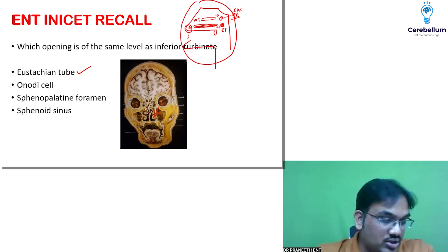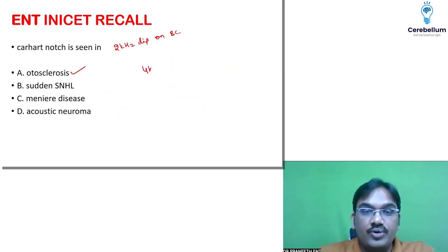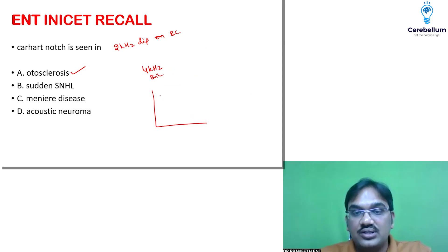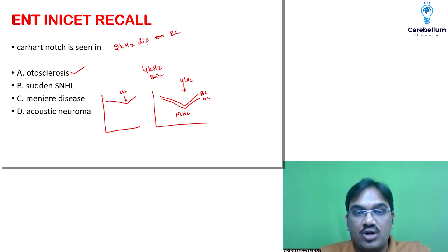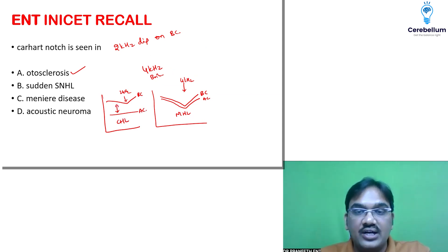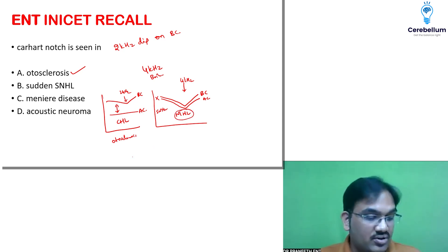Clarification on Carhartt's notch vs. 4 kHz dip: The 4 kHz dip is also called Boiler's notch in noise-induced hearing loss. In NIHL, both air conduction and bone conduction show a dip at 4 kHz with no gap between them — indicating sensorineural hearing loss. In Carhartt's notch (otosclerosis), there is a dip at 2 kHz on the bone conduction curve, but a gap exists between air and bone conduction — indicating conductive hearing loss. So Carhartt's notch is seen in otosclerosis; the 4 kHz dip is seen in noise-induced hearing loss.